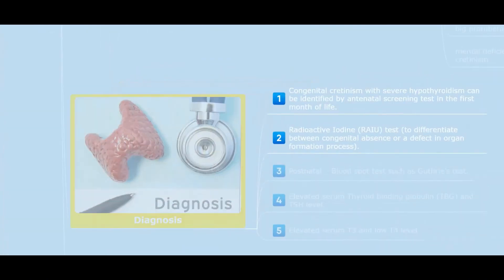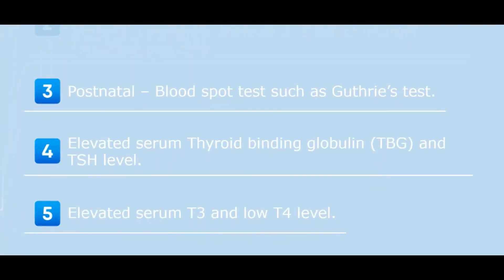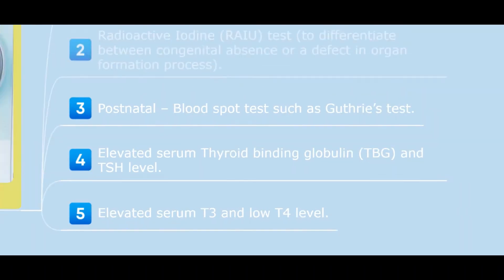Diagnosis: one, congenital cretinism with severe hypothyroidism can be identified by antenatal screening test in the first month of life. Two, radioactive iodine test to differentiate between congenital absence or defect in organ formation. Three, postnatal blood spot tests such as Guthrie's test. Four, elevated serum thyroid binding globulin (TBG) and TSH levels. Five, elevated serum T3 and low T4 levels.